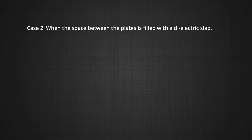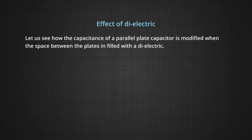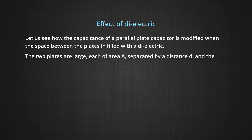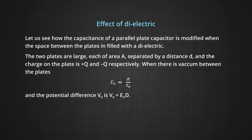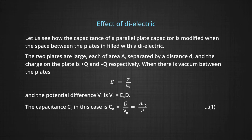Okay, now case 2: when the space between the plates is filled with a dielectric slab. Let us see how the capacitance of a parallel plate capacitor is modified when the space between the plates is filled with a dielectric. The two plates are large, each of area A, separated by a distance D, and the charge on the plates is +Q and −Q respectively. When there is vacuum between the plates, E naught will be equal to sigma by epsilon naught, and the potential difference is V naught, equal to E naught times D. The capacitance C naught in this case is C naught equal to Q by V naught, which is equal to A epsilon naught by D. This is our equation 1.